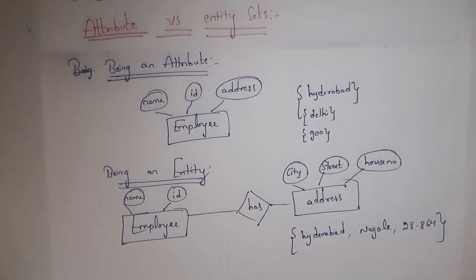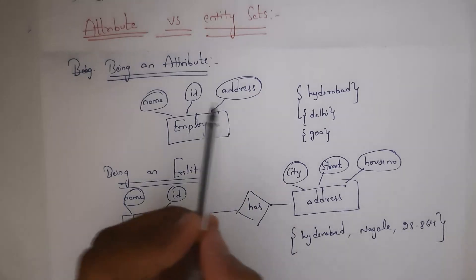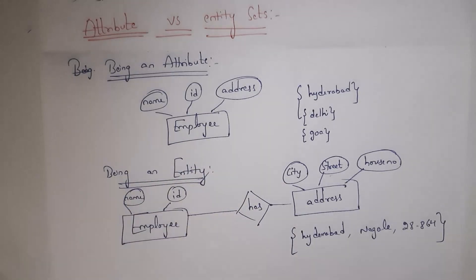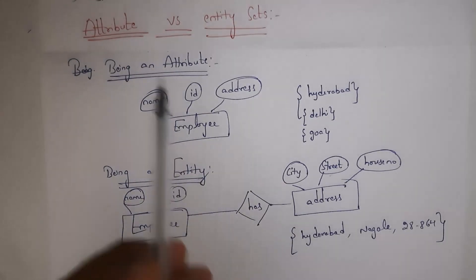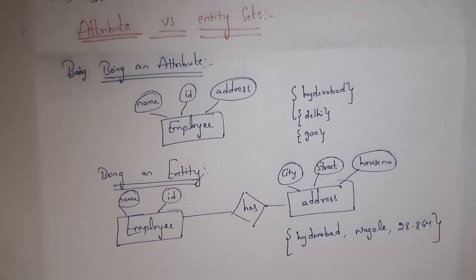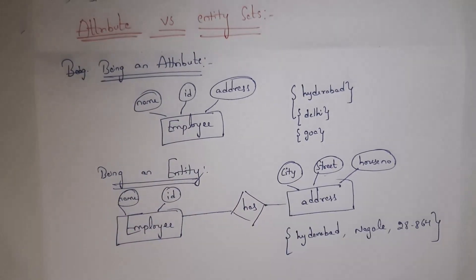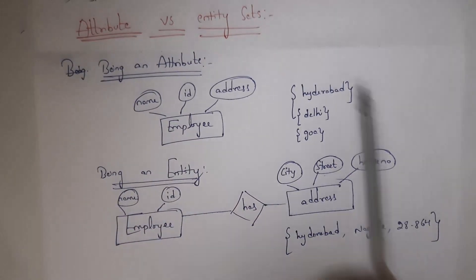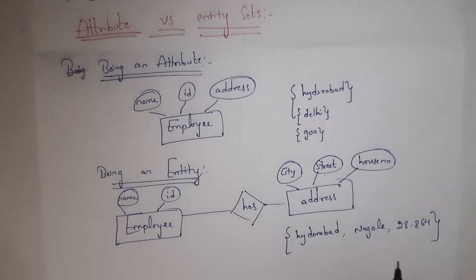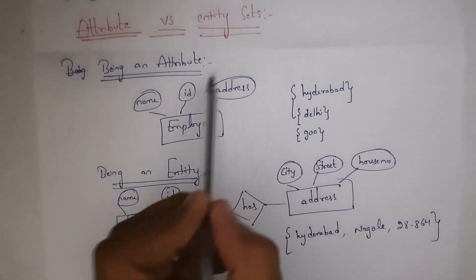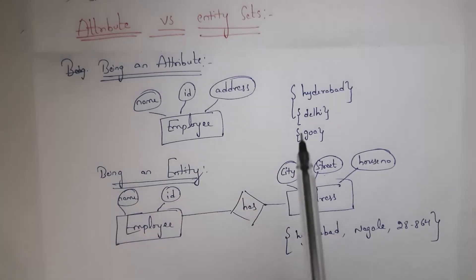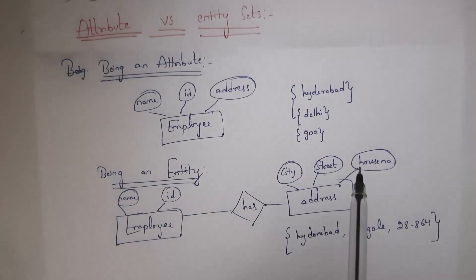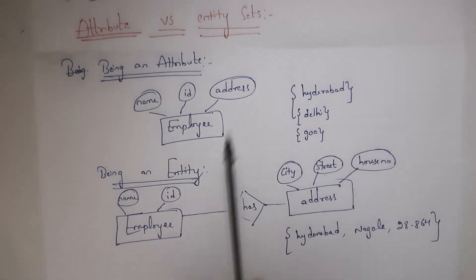First, I will explain attribute versus entity set. For example, there is an employee entity. This employee entity contains three attributes: name, id, and address. For example, if I want to give a single address like Hyderabad, Delhi, or Goa, and if you want to give only a single address, then you can select address as an attribute. Here, I want to enter a single address, so I am selecting address as an attribute.